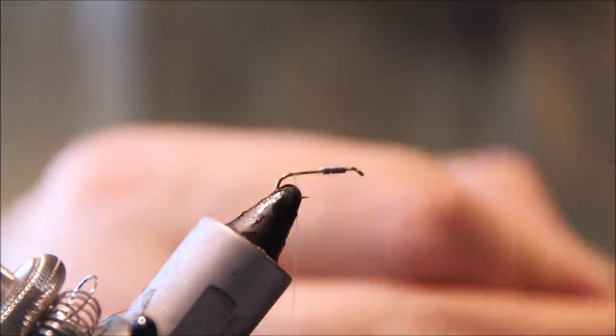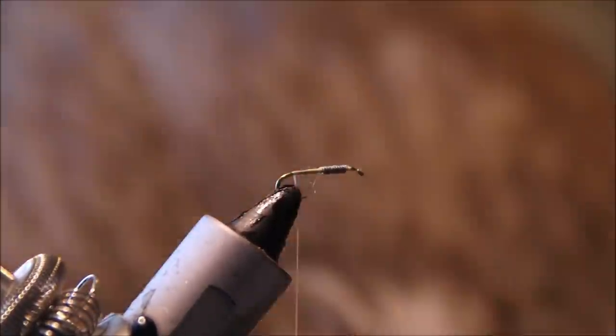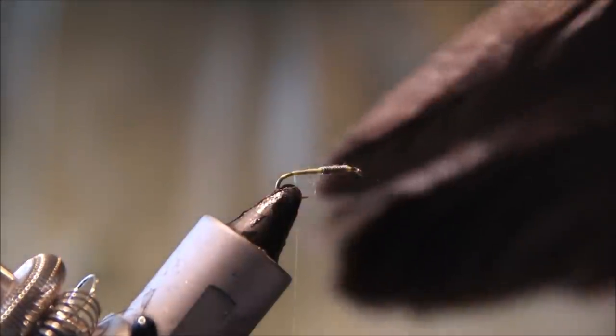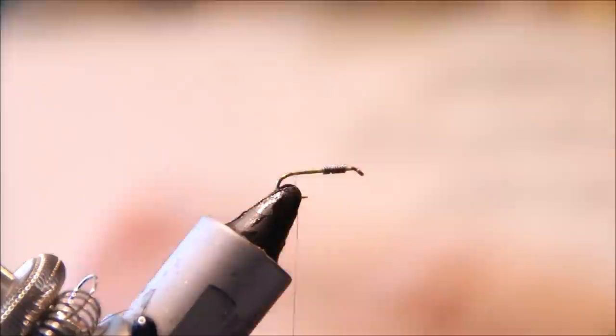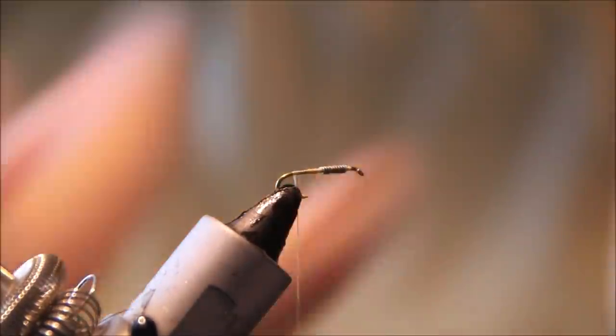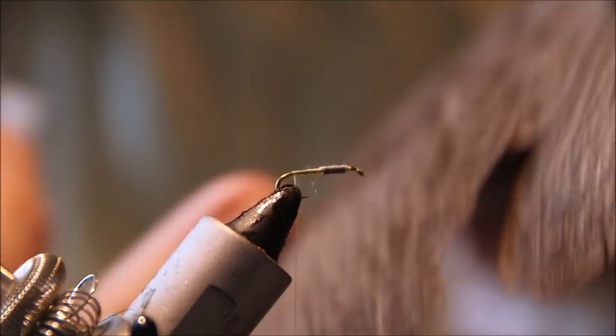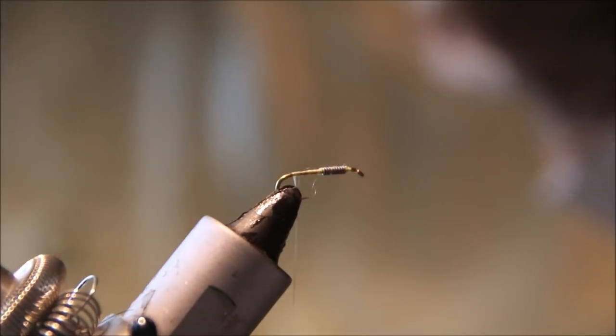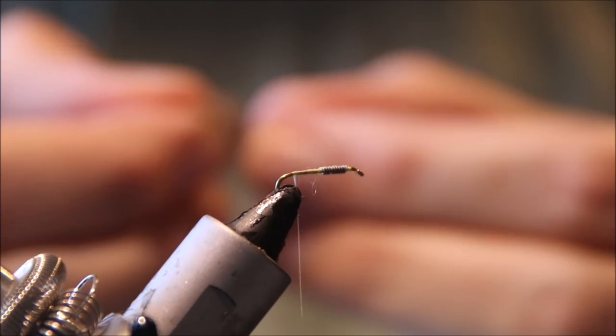For the tail and legs I'm using fibers from a Brahma Hen - specifically a Whiting Brahma Hen wing. The primary feathers make nice blue dun wings, but the backs of the wings and secondaries have this lovely mottled effect, similar to grouse but lighter in color.